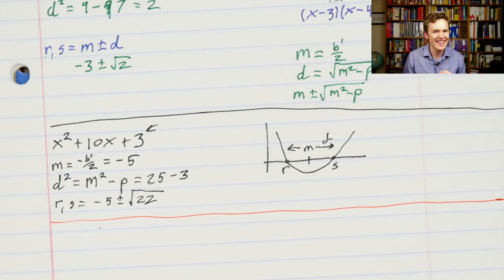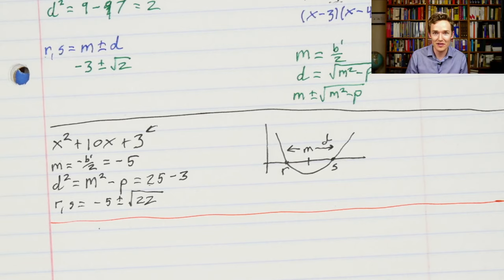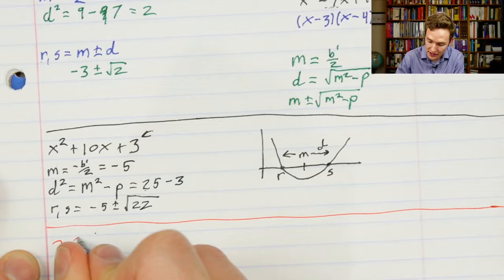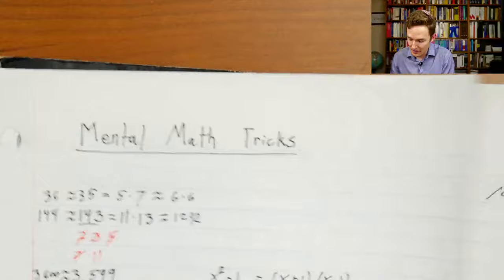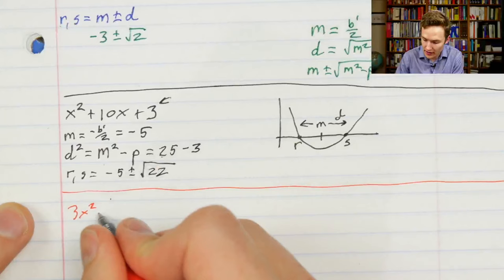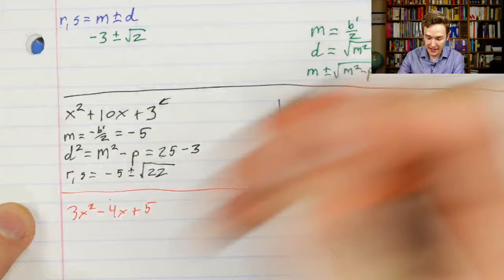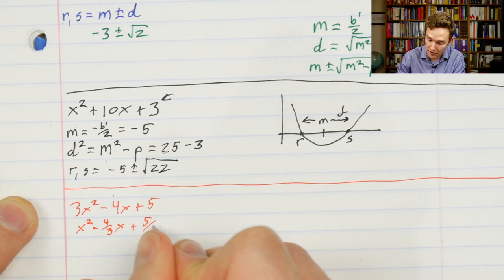Let's try another. As I go, if you have paper and pencil, please follow along — if you can race ahead and do the same process before I do, that's awesome. If you're watching this in the future, I highly encourage you to pause and ponder; that's the best way to learn math from a lecture. Let's do 3x²−4x+5. Step one: rescale by dividing by 3, giving x²−(4/3)x+(5/3). Now same process: the midpoint is the negative of the second coefficient divided by 2, so that's positive 4/3 divided by 2, which gives m=2/3. Then d²=m²−p=(2/3)²−(5/3)=4/9−15/9=−11/9.